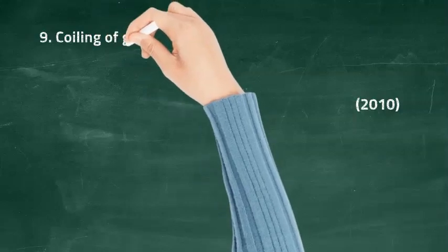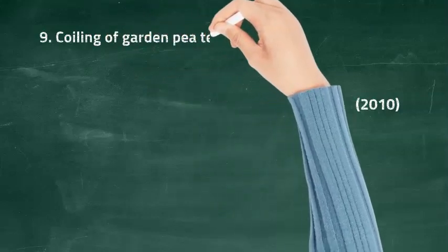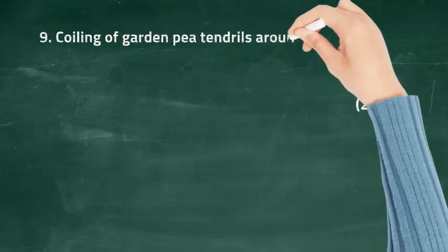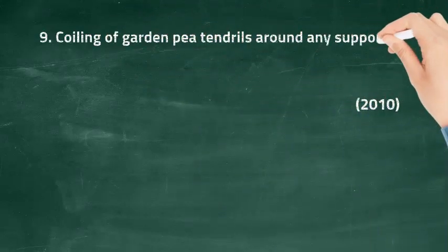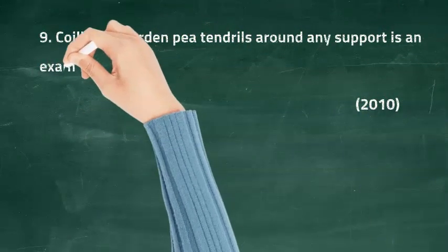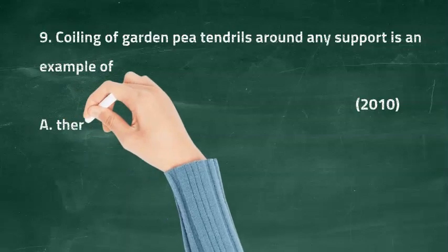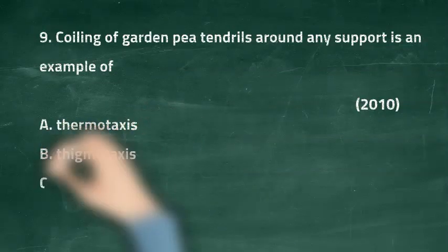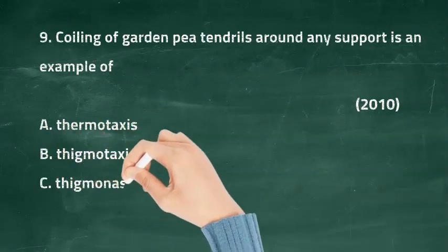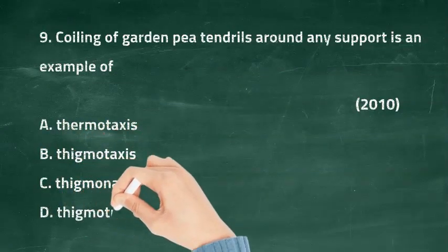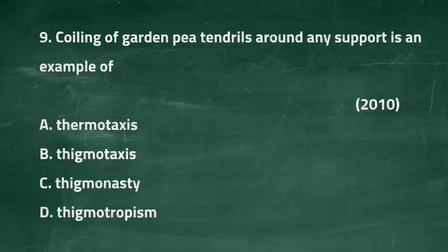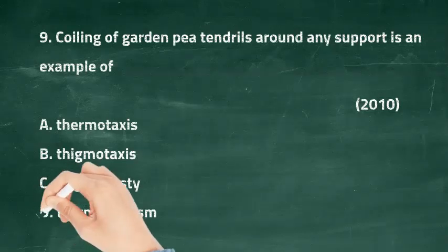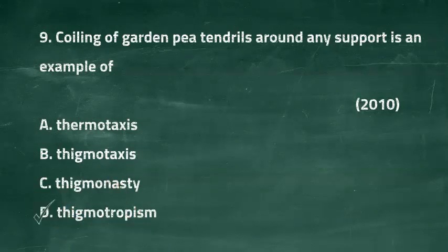Question nine: coiling of garden pea tendrils around any support is an example of — option A: thermotaxis, option B: thigmotaxis, option C: thigmonasty, option D: thigmotropism. The right answer is option D, thigmotropism.